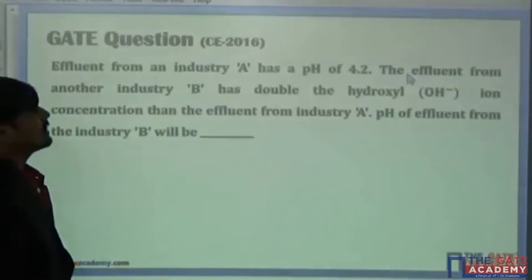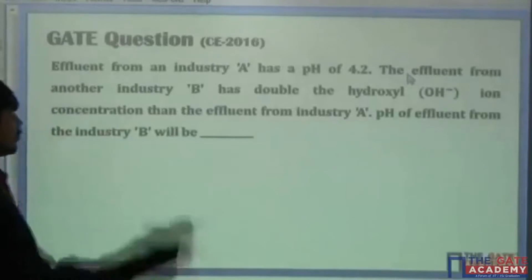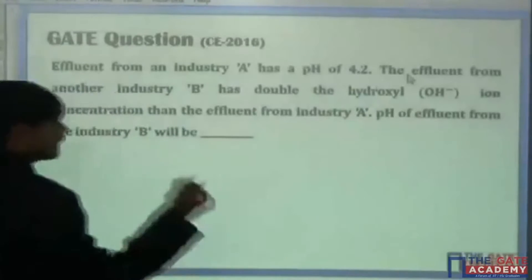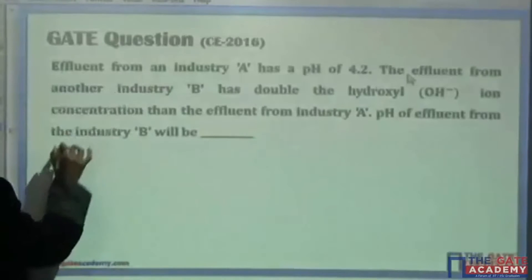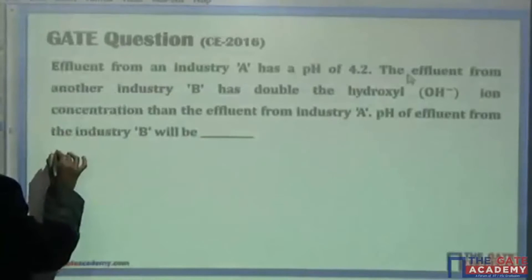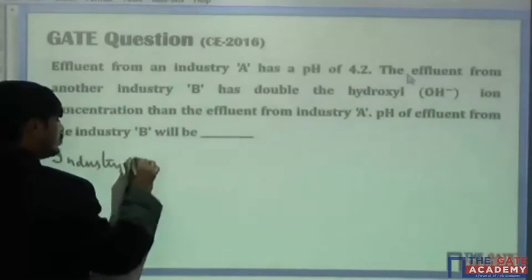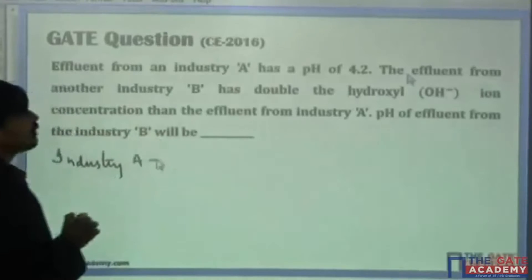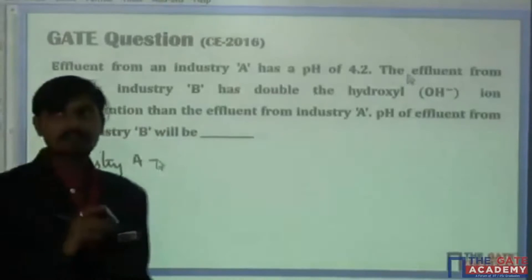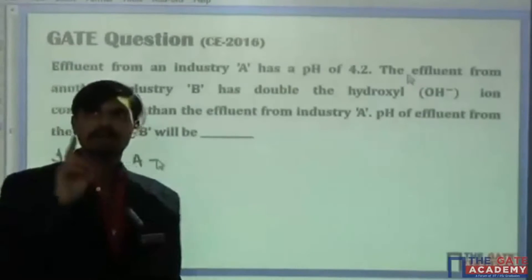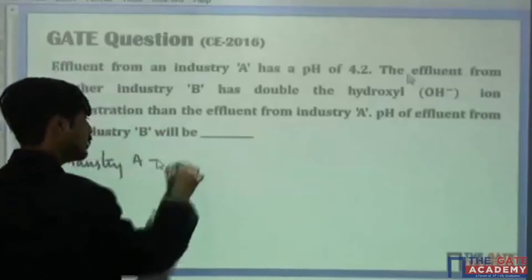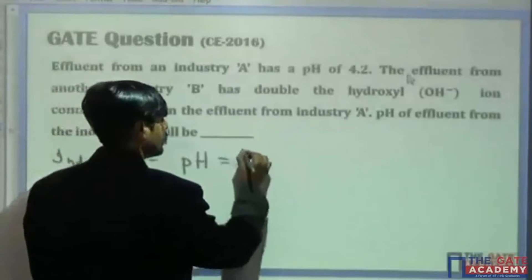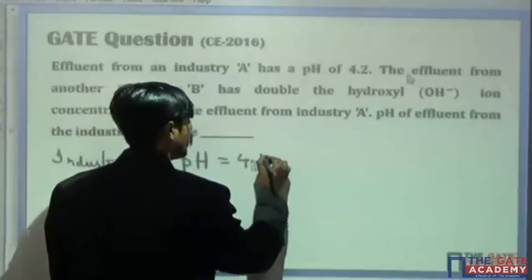Effluent from Industry A. Let me write the data — always try to write the data first. There is Industry A, and the pH value of the effluent is 4.2.